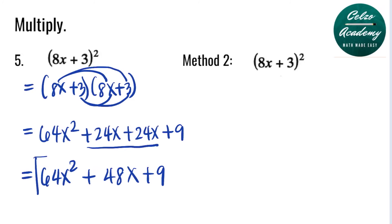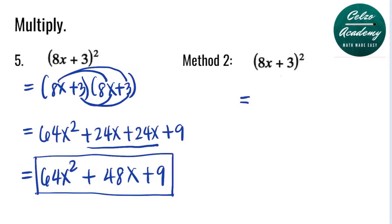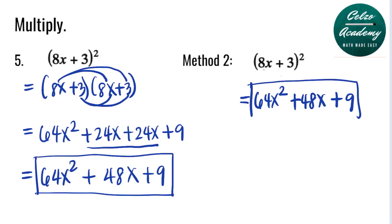Without using distributive property, there is a shortcut for squaring a binomial. Step 1: square the first term — that's 64x squared. Step 2: multiply the first term 8x and the second term 3 to get 24x, then double it to get 48x. Step 3: square the second term 3 — that's plus 9. You will get the same answer as with distributive property: 64x squared plus 48x plus 9.